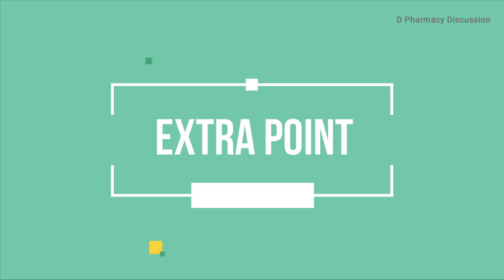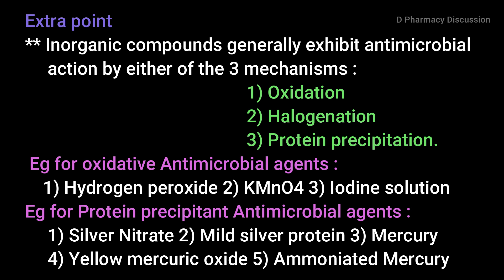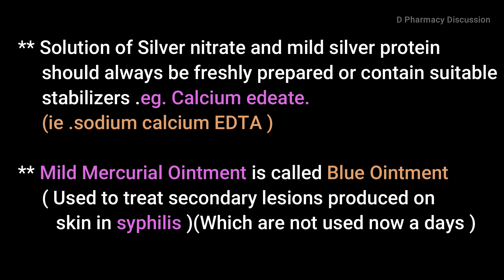Now for the extra points: inorganic compounds generally exhibit antimicrobial action by one of three mechanisms — oxidation, halogenation, and protein precipitation. Examples of oxidative antimicrobial agents include hydrogen peroxide and KMnO4. Examples of protein precipitant antimicrobial agents include silver nitrate, mild silver protein, mercury, yellow mercury oxide, and ammoniated mercury. Solutions of silver nitrate and mild silver protein should always be freshly prepared or should contain stabilizers.